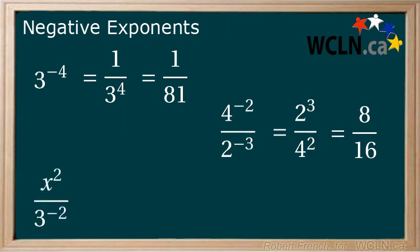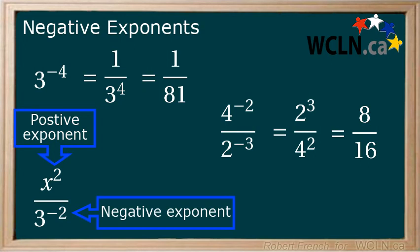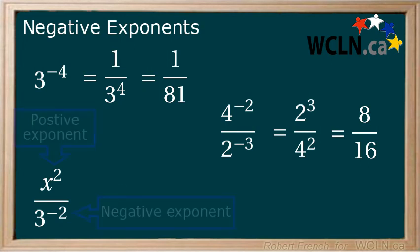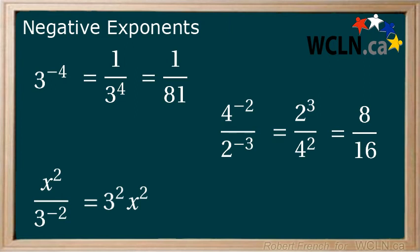One more with x squared over 3 to the power of negative 2. Our power in the numerator is positive so we can leave it there. Our denominator power is negative so we can bring it up to the numerator to make it positive. So now we have 3 to the power of 2 multiplying x squared. Remember when we have two terms touching like this it is the same as if there is a multiplication sign between them. And we can evaluate this to get 9x squared.